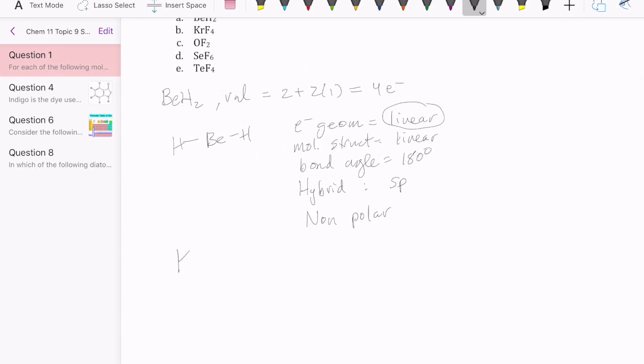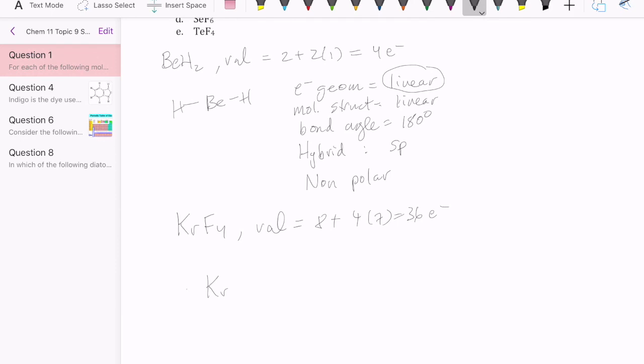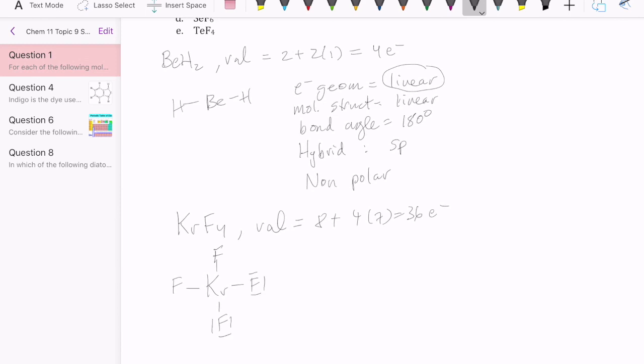Let's go to our next one, which is KrF4. Valence electron is 8 plus 4 times 7, which is 36. Central atom followed by 4 terminal atoms, which are all the fluorines. And then if we place pairs of electrons to make octet for fluorine, we would have used 32 electrons, which means we still have 4 left. And that 4 has to go to the krypton. Krypton is in the fourth period, so that allows krypton to violate octet rule by having more than 8 electrons. And that's what we have here.